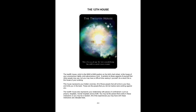The twelfth house, which is the 8 a.m. to 6 a.m. position on the birth chart wheel, is the house of your unconscious habits and subconscious mind. It pertains to those aspects of yourself that other people may see but you may have difficulty seeing in yourself — as a result, this is the house of your undoing. This house represents your hidden enemies: all those people that smile to your face and knife you in the back, people you did not realize were working against you. The twelfth house also represents your relationship with places of confinement, such as prisons, hospitals, mental hospitals and so forth — you may be the person that works in these institutions or you may be a resident.